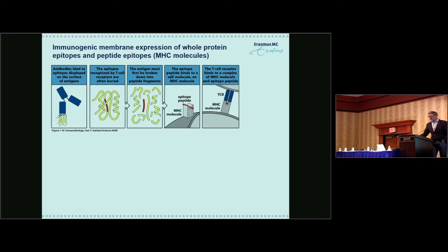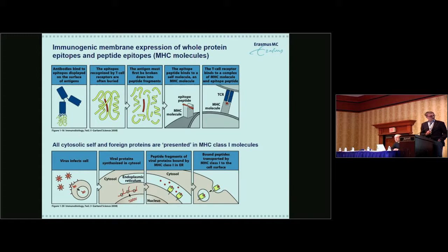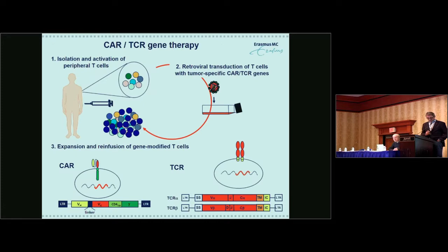The immunological principles are restricted to the fact that membrane-bound antigens can be recognized by antibodies, while epitopes from these membrane-bound antigens are processed in the cell and expressed in MHC molecules to present a peptide recognized by a T cell receptor. All cytosolic antigens — self or foreign antigens introduced by viruses — are processed in the cytosol, and epitopes are released in the endoplasmic reticulum to be loaded into MHC molecules and presented at the cell surface.